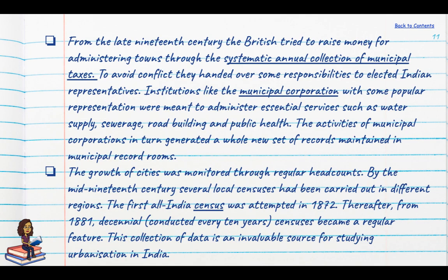From the late 19th century, the British tried to raise money for administering towns through the systematic annual collection of municipal taxes. To avoid conflict, they handed over some responsibilities to local organisations by establishing municipal corporations and gave some power to Indian representatives. Voting rights were very limited, but some localised decisions were being taken by elected Indians, and these municipal corporations generated a whole new set of information maintained in municipal record rooms.